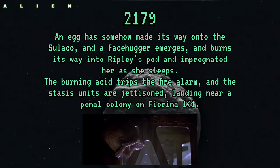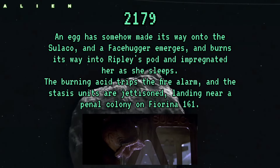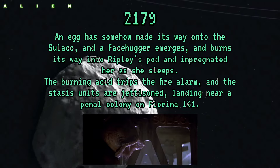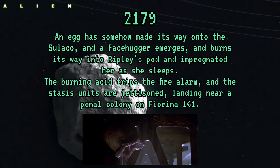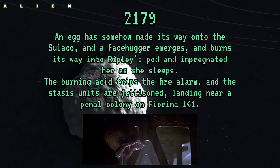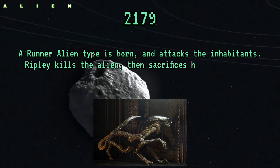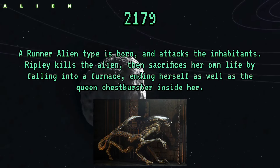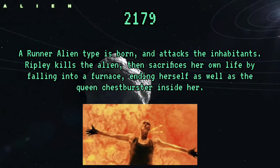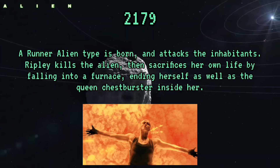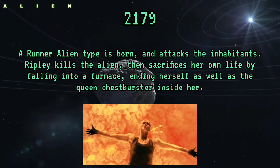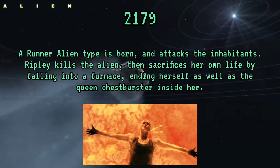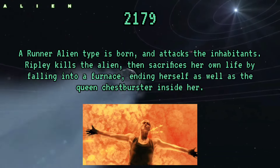The burning acid triggers the fire alarm and the stasis units are ejected, landing near a penal colony on Fiorina 161. A runner alien type is born and attacks the inhabitants. Ripley kills the alien then sacrifices her own life by falling into a furnace, ending herself as well as the queen chestburster inside her.